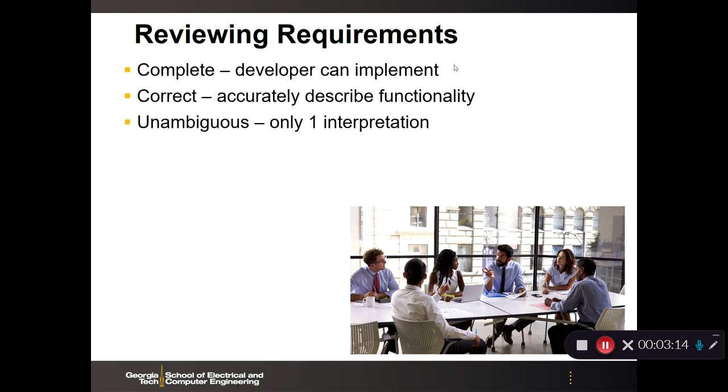And then unambiguous, this is important. You only want one interpretation. You want a requirement that is short and succinct enough that if you were to hand it to multiple developers, they would provide you whatever software or hardware design that implemented that requirement. Now, how they do it, there's still freedom of design in terms of how they go about it, but there's no ambiguity with that.